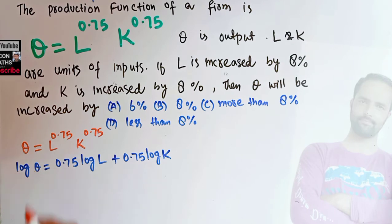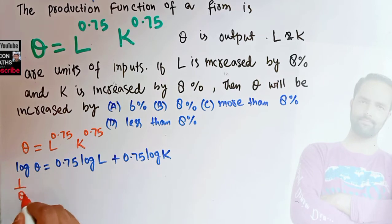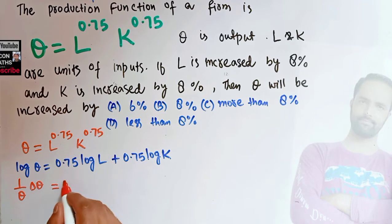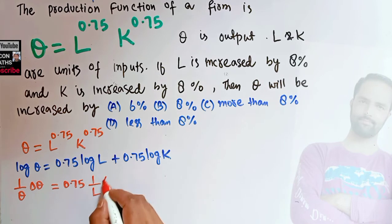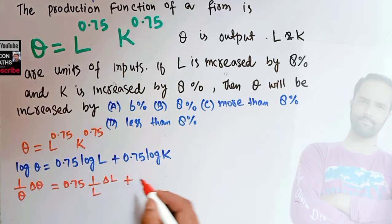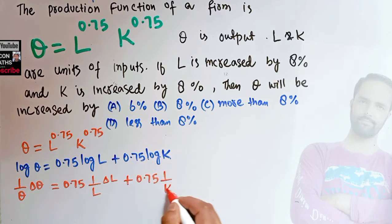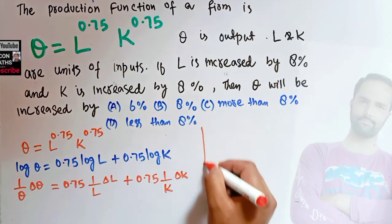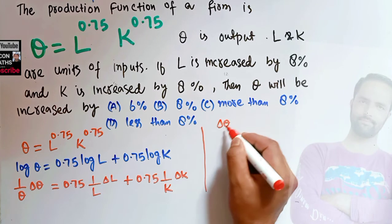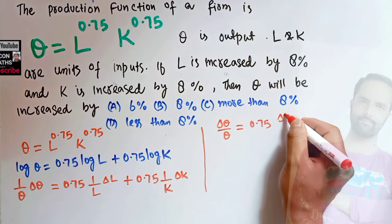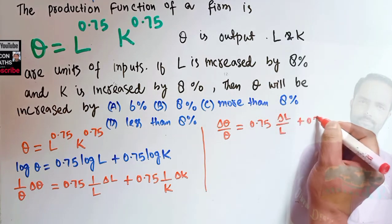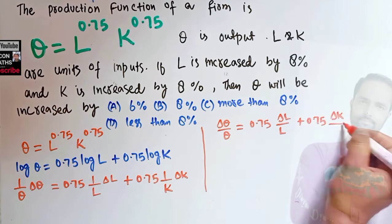Taking the differential: the derivative of log Q is 1/Q × dQ, which equals 0.75 times — and log of L differentiates to 1/L from the rules of differentiation — so 0.75 × (1/L) dL, plus 0.75 × (1/K) dK. Rewriting: dQ/Q = 0.75 × (dL/L) + 0.75 × (dK/K).